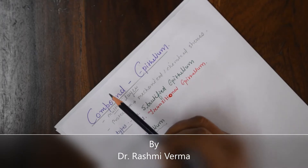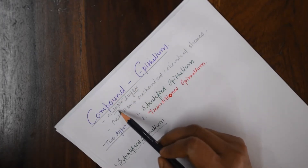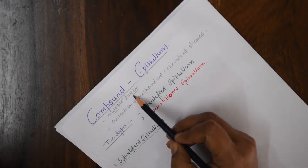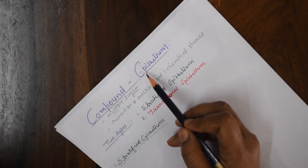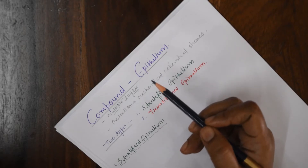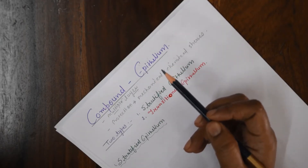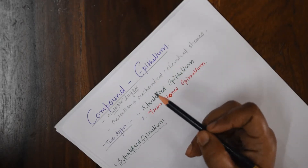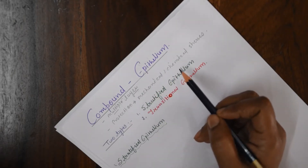In compound epithelium, the epithelial cells are arranged in multiple layers, and this type of epithelium has little role in absorption, excretion, secretion, or exchange of gases. They are mainly concerned with protection against mechanical and chemical stresses.